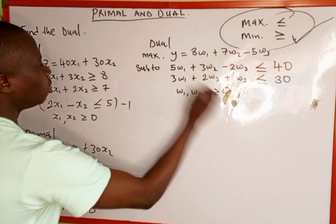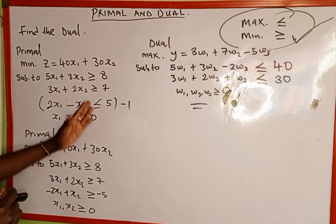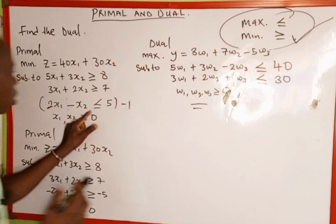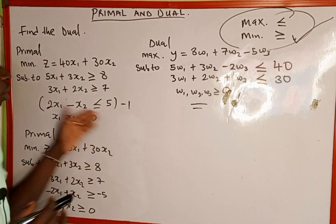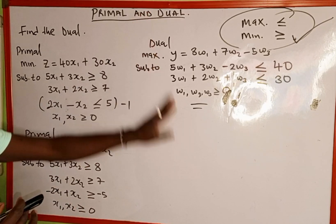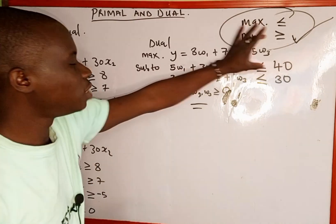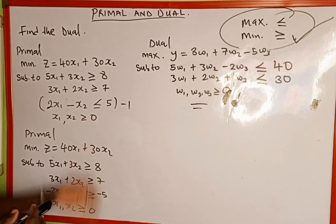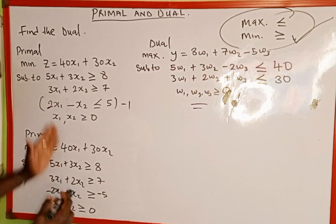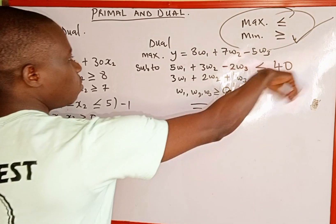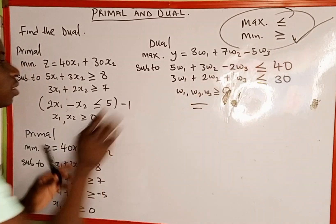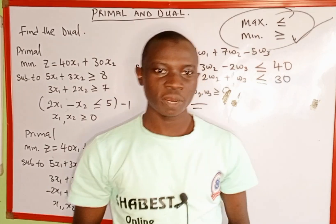So here is the duality of this problem. We first checked whether the problem was in the correct format, noticed one equation violated the condition, and multiplied it by negative 1 to change the inequality to greater than. Then we found the duality: the right-hand side becomes the objective function, columns become rows, and the new right-hand side is the objective function of the primal. Thank you for watching and please don't forget to subscribe to my YouTube channel.